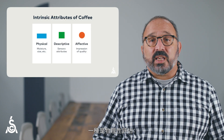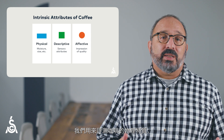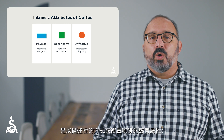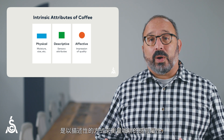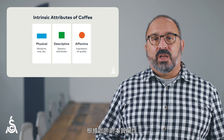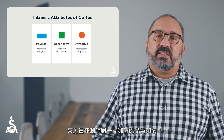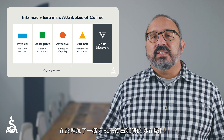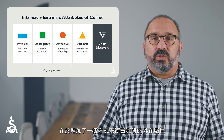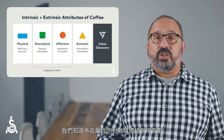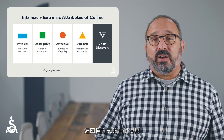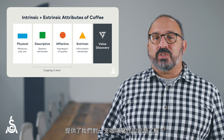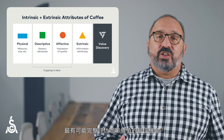So, when measuring coffee attributes, there are three tools we can use to measure a coffee's intrinsic attributes: a physical assessment, where we evaluate coffee's physical properties; a sensory descriptive assessment, which measures coffee's sensory attributes in a descriptive way; and an affective assessment, which measures the cupper's impression of a coffee's quality based on its intrinsic attributes. A major innovation in the coffee value assessment is the addition of a fourth tool to measure extrinsic attributes, which we know also contribute to a coffee's value. These four tools, used together, can provide a complete picture of a coffee's attributes and give us the best possible chance of assessing a coffee's value completely.